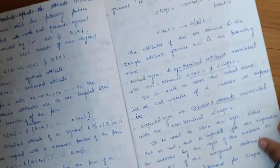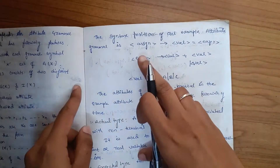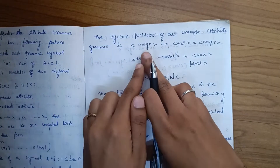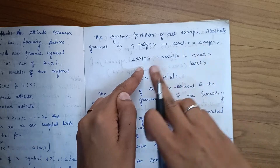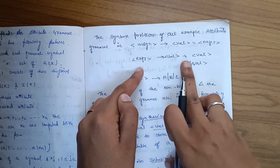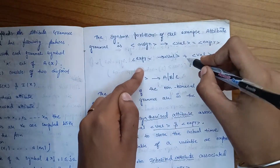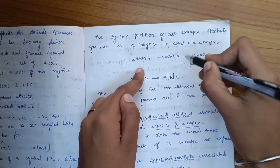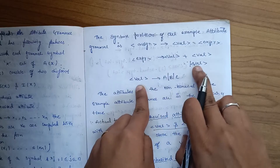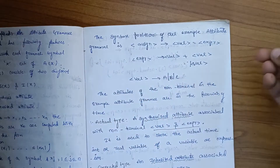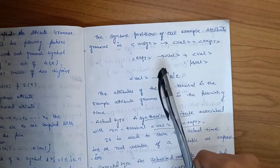The syntax portion of the example attribute grammar is: statement is equal to variable equals expression. The expression produces variable plus variable. The expression also produces variable minus variable. And the variable produces a variable name. We will replace the variable and write the rules.